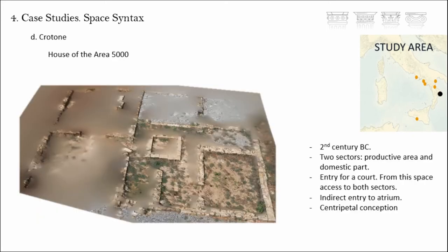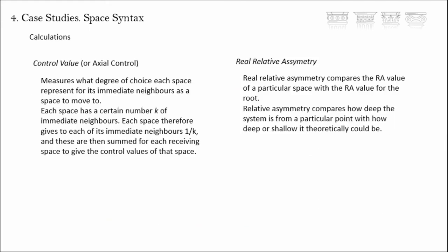And finally, the house of Crotone — also from the second century BC — is interesting because it has two different areas: some domestic rooms but also some productive areas, which is also interesting to analyze. With that, we begin to analyze some structural calculations to analyze the role of each room within the relationship of the structure of the house. On one side, we analyze the control value, which measures more or less the ability of each room to communicate with other rooms, and the real relative asymmetry, which is a value that allows us to analyze the integration of each room within the overall structure of the house.